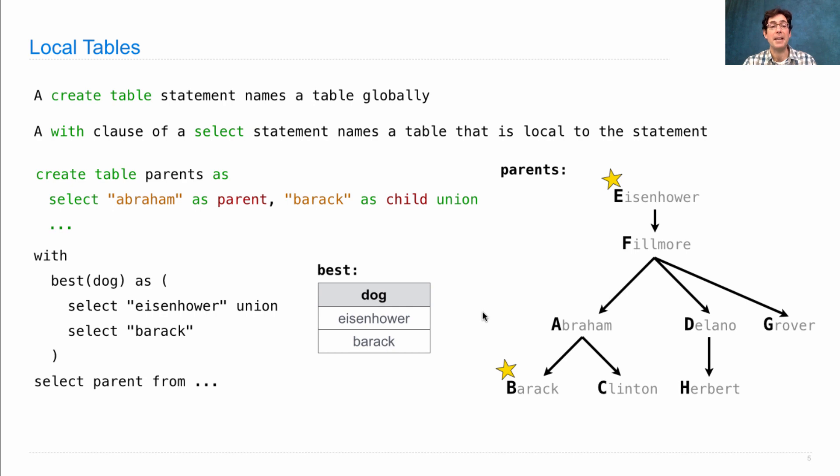And we can use this table in our select statement down here to say select parents from the parents joined with the best table, where the child in the parents table is the same as the dog in the best table. So this will give us all of the parents of the best dogs. What are the parents of the best dogs? Well, Eisenhower doesn't have a parent, so we just get a table with Abraham in it.